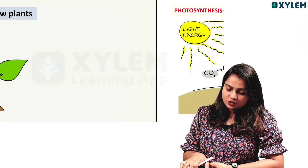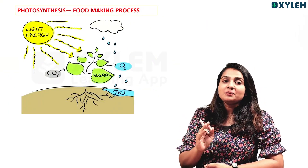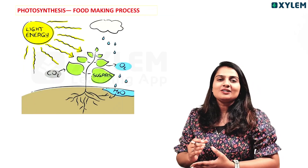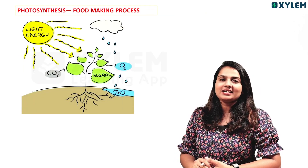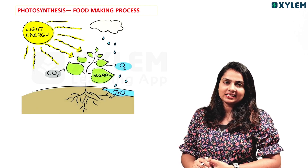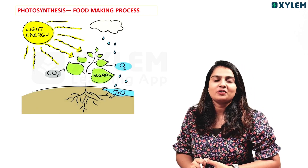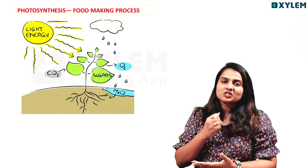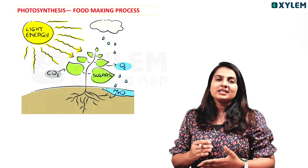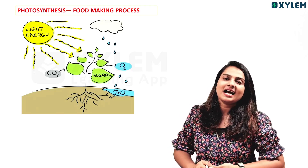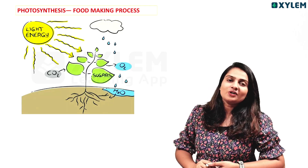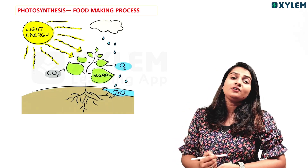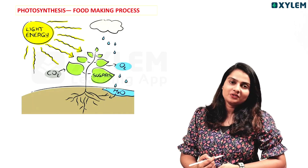Now, getting to know plants in this chapter is important. We are going to talk about photosynthesis. The process of making food by plants is known as photosynthesis.